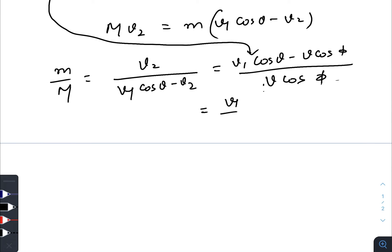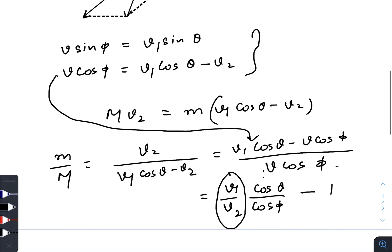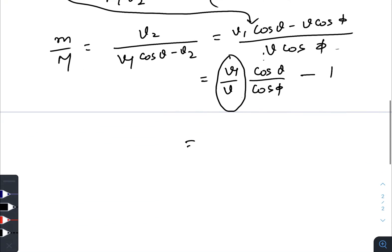But hey, v1 cos theta minus v2 is nothing but v cos phi, so you can just replace this one as v cos phi. So you are getting v1 divided by v, which is cos theta by cos phi minus 1. Now you can replace v1 by v from this equation, so v1 by v is sin phi by sin theta, so sin phi divided by sin theta cos theta cos phi minus 1.